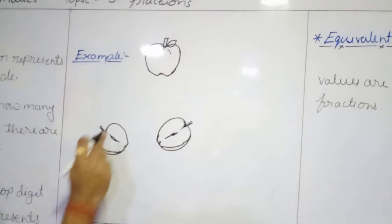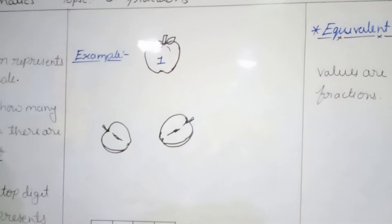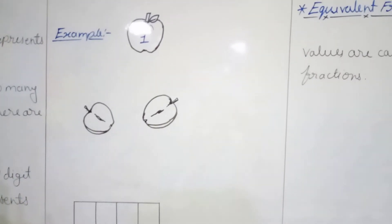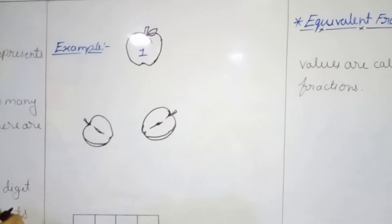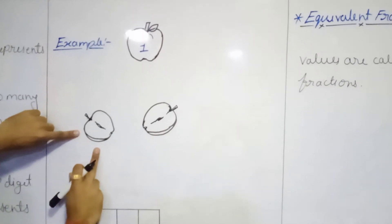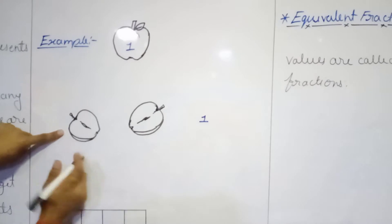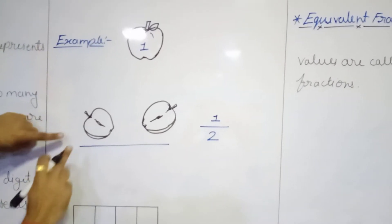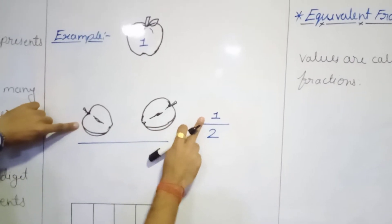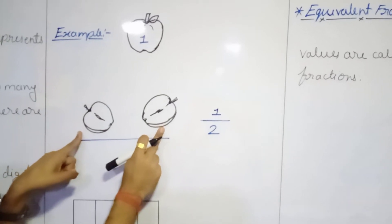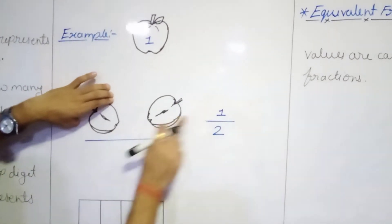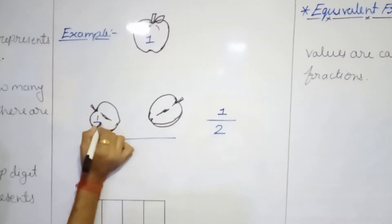Here we have a diagram of an apple. If we want to say how many apples this is, this is 1 apple. Now that is divided into 2 parts. I am talking about this first part - this is 1 out of these 2. So it will become the numerator on top. This 1 is 1 part out of the whole of 2. We are talking about this first piece, so 1 out of 2 - it will become 1 upon 2. We can denote it as 1 upon 2.